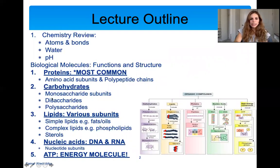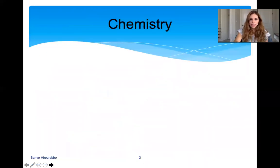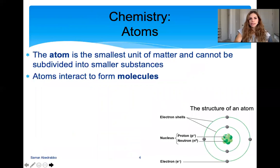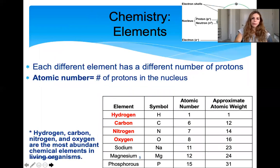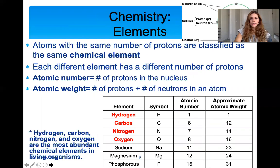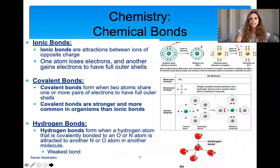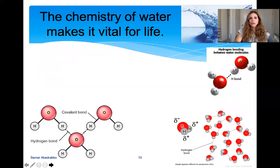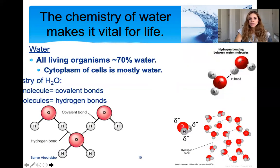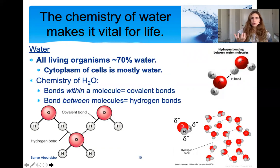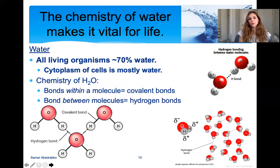We're going to talk about proteins, carbohydrates, lipids, and nucleic acids, and then end with ATP, the energy molecule of the cell. I'm going to start off with water. When we look at all cells, the most prevalent molecule in all cells is water. This is why scientists say that when they go to a new planet and they're looking for life, they look for water.